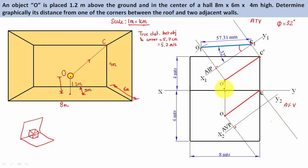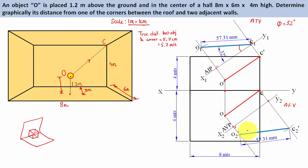To locate O2, keep one leg of the compass at the appropriate reference point and cut an arc — that gives O2. To locate C2, similarly take the arc from XY using the compass and cut an arc — that gives C2. When you join C2 with O2, this line represents the true length, which again works out as 57.31 millimeters — 5.7 centimeters or 5.7 meters in reality. The angle this line makes with the horizontal plane is 29 degrees.